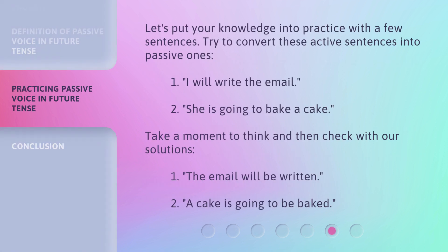Let's put your knowledge into practice with a few sentences. Try to convert these active sentences into passive ones. 1. I will write the email. 2. She is going to bake a cake. Take a moment to think and then check with our solutions. 1. The email will be written. 2. A cake is going to be baked.